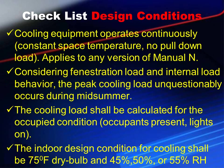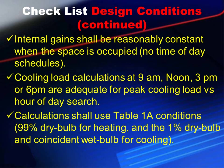Design conditions: cooling equipment operates continuously with a constant space temperature and no pull-down load. This applies to any version of Manual N. Considering fenestration and internal load behavior, the peak load unquestionably occurs during mid-summer. The cooling load shall be calculated for the occupied condition — occupants present, lights on. The indoor design condition for cooling shall be 75°F dry bulb at 45, 50, or 55% relative humidity. Calculations shall use Table 1A conditions: 99% dry bulb for heating and 1% dry bulb with coincident wet bulb for cooling.